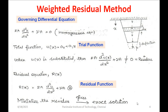Here we are considering a uniform rod equation — it is a second-order differential equation with zero on the right-hand side, so it is called a homogeneous equation. In any numerical method, the first step is to assume a trial function. To initiate the numerical method, we assume a trial solution.